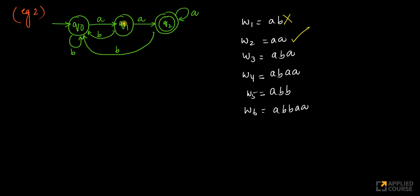'a, b, a' — it doesn't accept this. 'a, b, a, a' — it's accepting this. One important thing to notice: if my string is ending in 'aa', look at this. If I keep getting b's from this state, I'll continue to stay in the same state. If I get 'aa' followed by a b, I'll come back to q1.